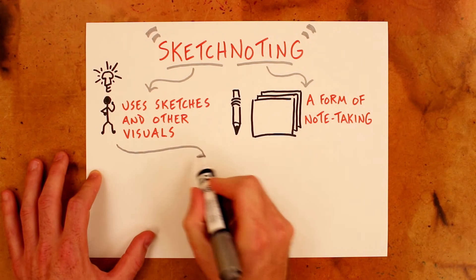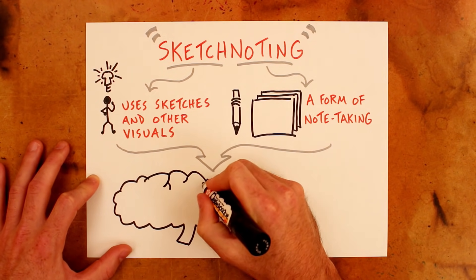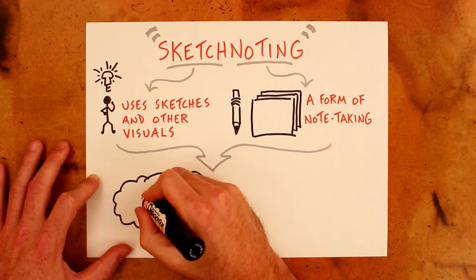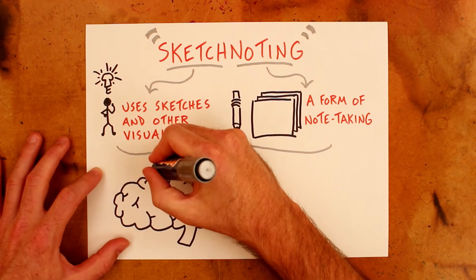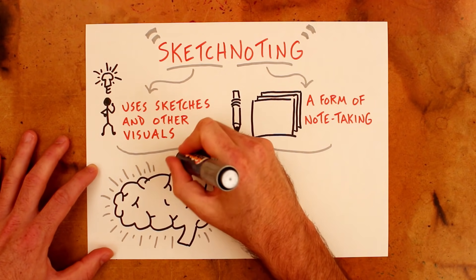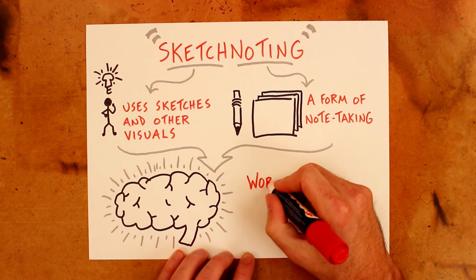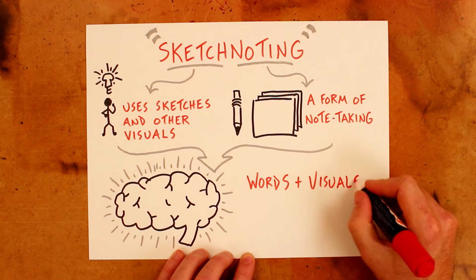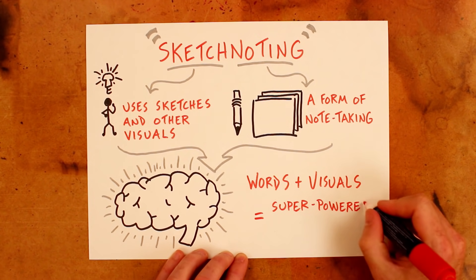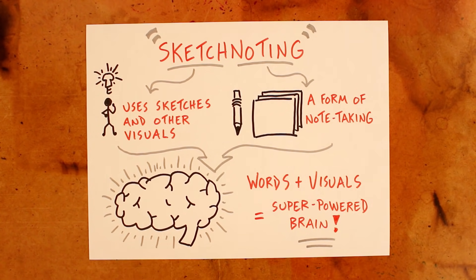The whole idea behind adding sketches to your notes is that it taps into parts of your brain that would lie dormant if you only use words to explore ideas. It's the combination of the two that's most powerful — using both words and visuals while taking notes. That's what will fully light up your brain.